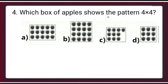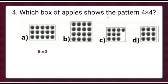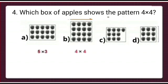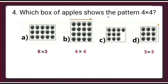Next question: Which box of apples shows the pattern 4 into 4? We will look at box A — there are 5 apples on the right hand side and 3 on the left hand side, so the pattern is 5 into 3. In box B, there are 4 apples on the right and 4 on the left. In box C there is no correct pattern. For option D, there are 3 apples on each side, so the pattern is 3 into 3. The correct answer is option B, which shows the pattern 4 into 4.